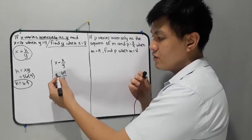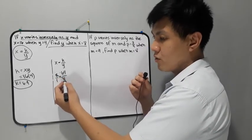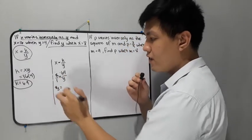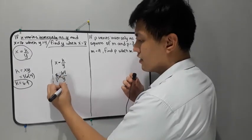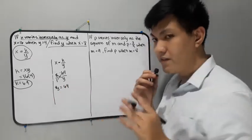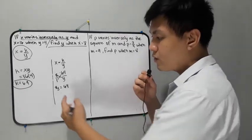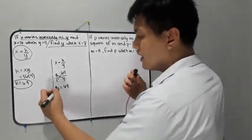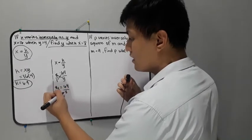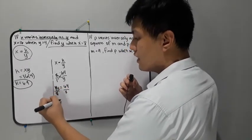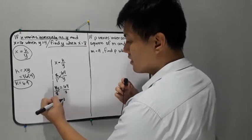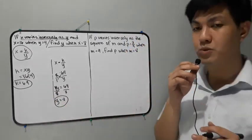To cross multiply: 8 times y gives 8y, and 1 times 64 gives 64. Now y is no longer in the denominator. The variable should be alone, so we remove 8 by dividing both sides by 8. Cancel 8, so y is already isolated. Then simplify: 64 divided by 8 is 8. Therefore the value of y here is equal to 8.